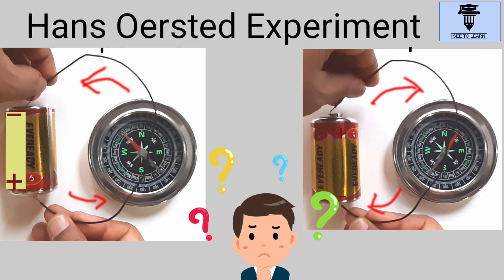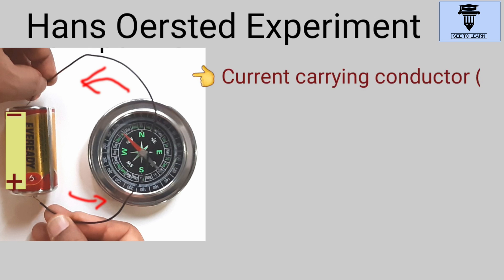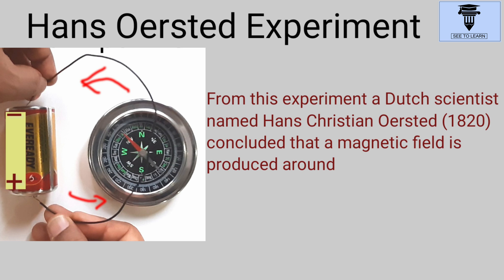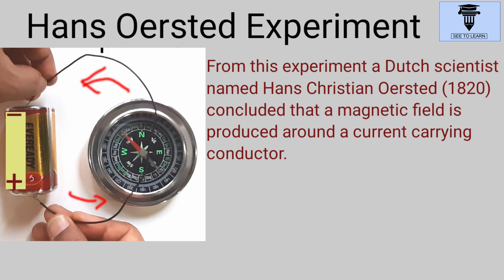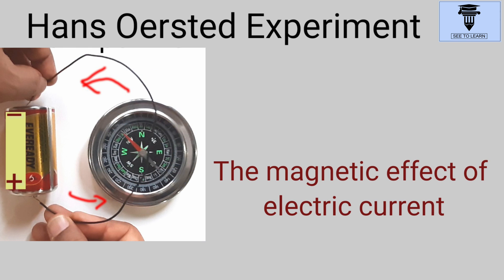Wondering where's the other magnetic field that deflects the needle? Is it the wire? Yes, it is. From this experiment, a Dutch scientist named Hans Christian Oersted concluded that a magnetic field is produced around a current-carrying conductor. This is called the magnetic effect of electric current.